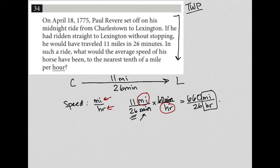26 hours. So now my units are perfect. I have miles per hour, but I can reduce this. So what is 660 divided by 26? And again, they want me to round this to the nearest tenth of a mile. So this is going to be 25. I get 25.38 in my calculator, which rounds to 25.4.